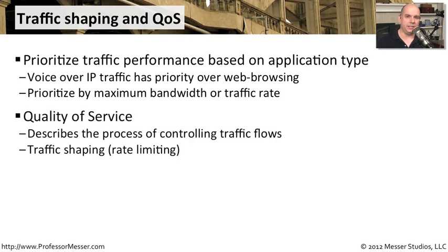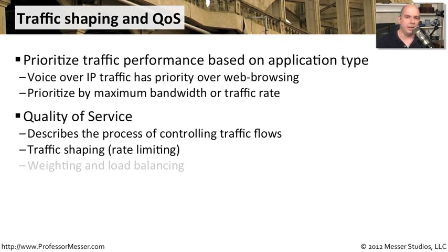There are many techniques under the surface to accomplish quality of service. One common method is traffic shaping — we set up queues and do rate limiting of different traffic so certain applications get more packets through than others, limiting who can go through the gate at any time. A network administrator might also set up weighting or load balancing to distribute the load over many different devices.